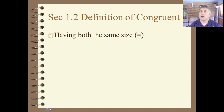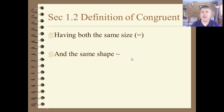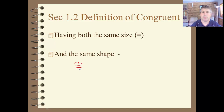Congruency: in order for things in geometry to be congruent, two parameters need to be met — they have both the same size and the same shape. Same size uses the equal sign; same shape uses the tilde, which is the similarity symbol. If something has the same size and the same shape, we deem them congruent, using the tilde on top of the equal sign as our congruent symbol.